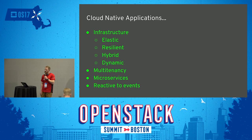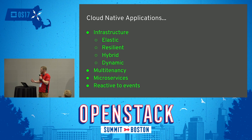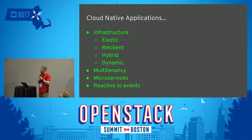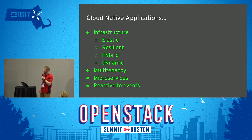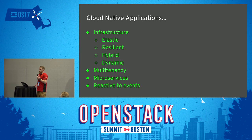When we talk about deploying applications on the cloud, these are some of the characteristics that most people tend to think of: you have an elastic and resilient infrastructure, it's also usually hybrid with multiple deployment targets whether physical or virtual, you have a microservices approach where services expose an API and are loosely coupled, and your services are composable so they work together to form a larger application.